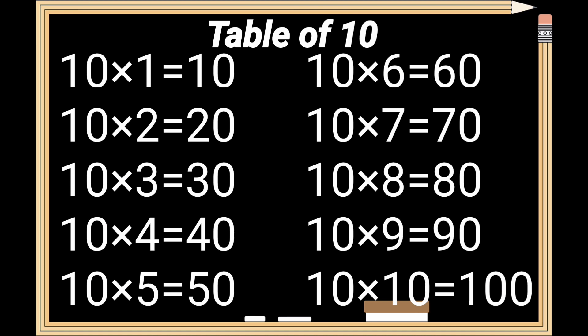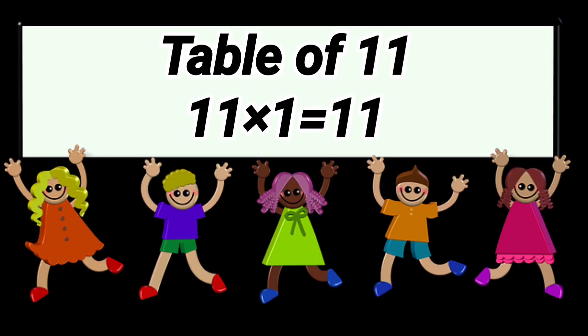Table of 10 review. Ten one the ten, ten two the twenty, ten three the thirty, ten four the forty, ten five the fifty, ten six the sixty, ten seven the seventy, ten eight the eighty, ten nine the ninety, ten ten the hundred. Table of eleven.